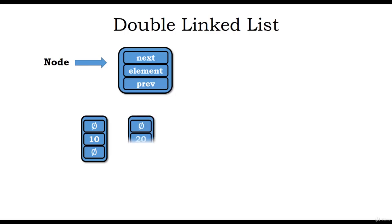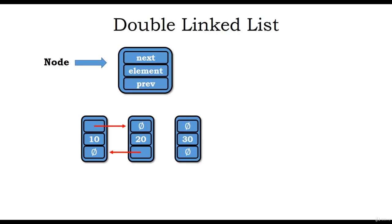A new node for element 20 will be created, also with null for next and previous. Now node 10 should link towards node 20, so the next member of node 10 is assigned the reference of node 20, and previous of node 20 is assigned the reference of node 10. The previous of node 10 is none, as there is no node before it, and next of node 20 is none. As the list grows, a node 30 is added with both next and previous as null, then next of node 20 references node 30 and previous of node 30 references node 20.